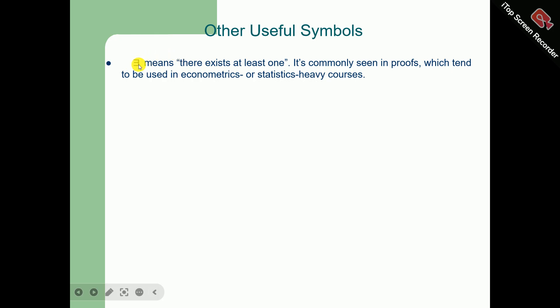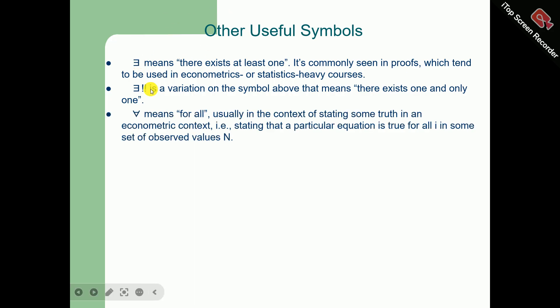This symbol means 'there exists at least one.' It is commonly seen in proofs which tend to be used in econometrics or statistics-heavy courses. This symbol is a variation of the symbol explained above: 'there exists one and only one.' So this symbol means there exists one and only one, whereas the previous symbol means there exists at least one.